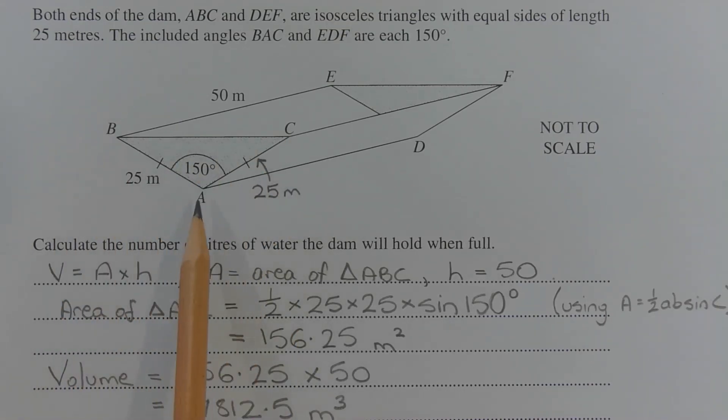Now triangle ABC is isosceles, which means side AC is equal to side AB. So we have side lengths of 25 metres each and an included angle of 150 degrees.